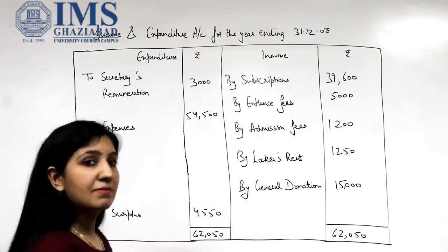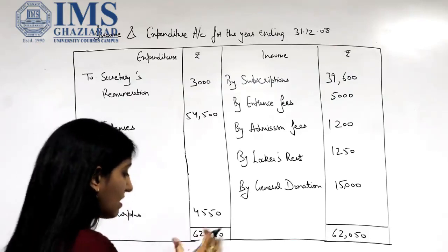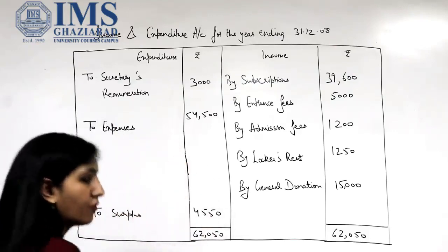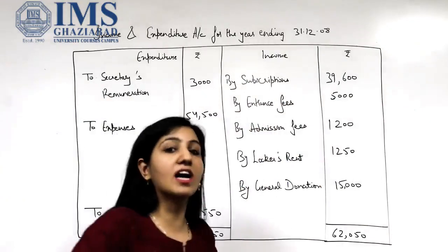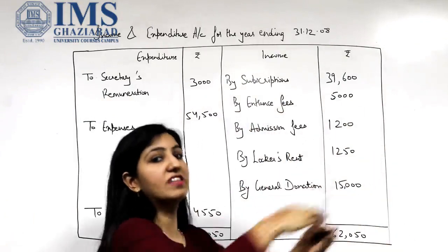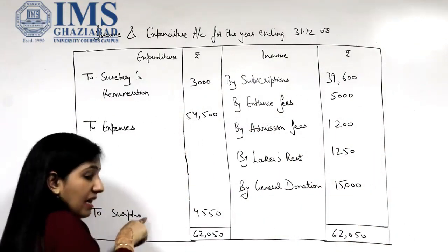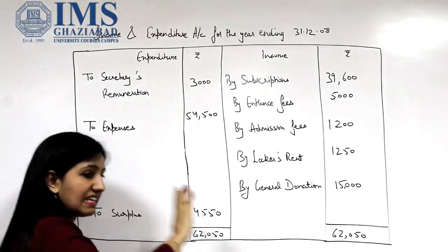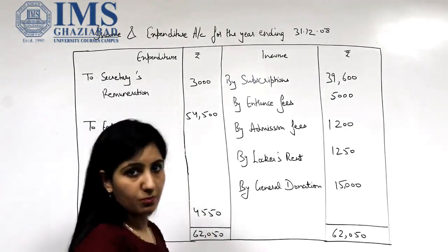How do we prepare an income and expenditure account with the help of a receipt and payment account? A receipt and payment account shows all the cash which has flowed in and all the cash that has flowed out in a particular year. With the help of that, we now have to find out whether the NPO has earned a surplus or whether the NPO is in deficit.